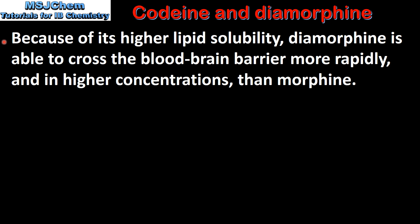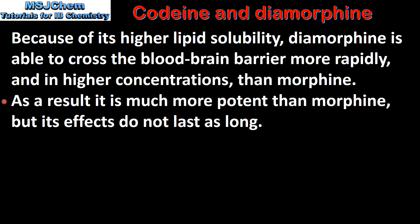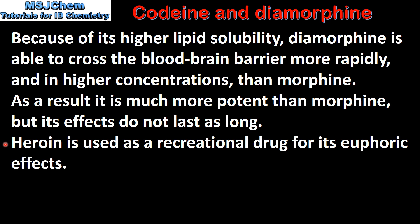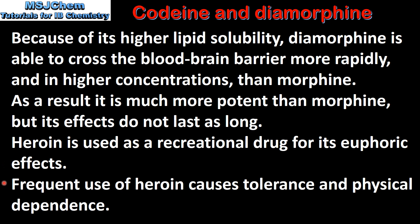Because of its higher lipid solubility, diamorphine is able to cross the blood-brain barrier more rapidly and in higher concentrations than morphine. As a result, it is much more potent than morphine but its effects do not last as long. Diamorphine, or heroin, is used as a recreational drug for its euphoric effects. Frequent use of heroin causes tolerance and physical dependence.